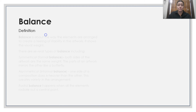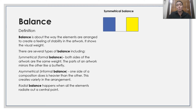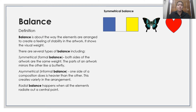The first one is balance. Balance is about the way the elements are arranged to create a feeling of stability in the artwork — it shows the visual weight. There are several types of balance including symmetrical, which is the formal balance, where both sides of an artwork are the same weight and the parts of an artwork mirror each other, like a butterfly.